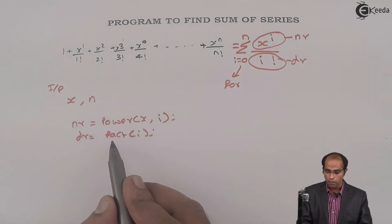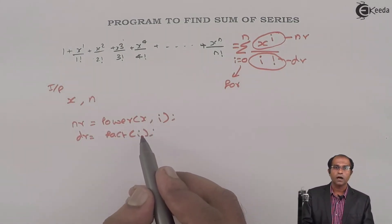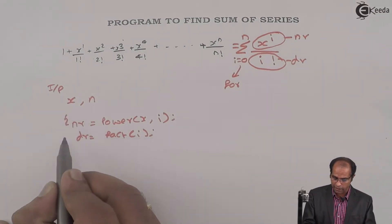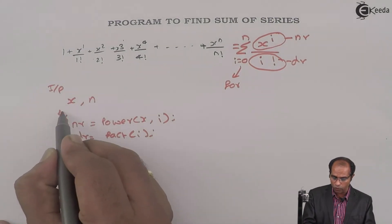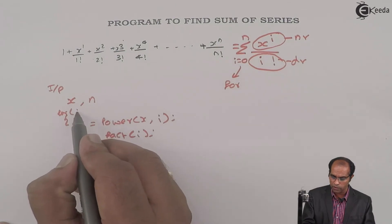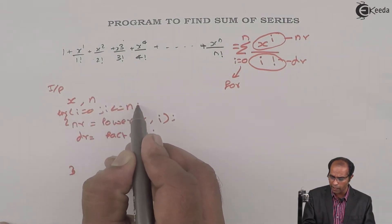I have called a function called power, I have called a function called fact. But these two concepts are supposed to be called for different values of i, hence this has to be enclosed within a for loop where i goes from 0, i less than equals to n, i++.